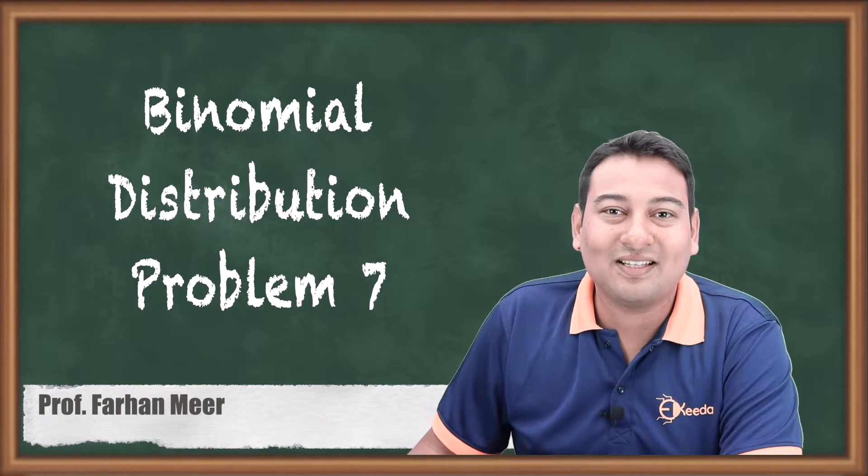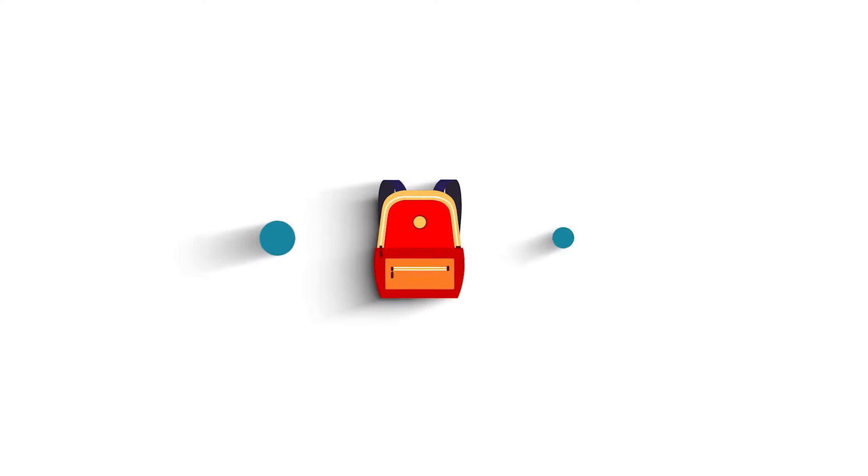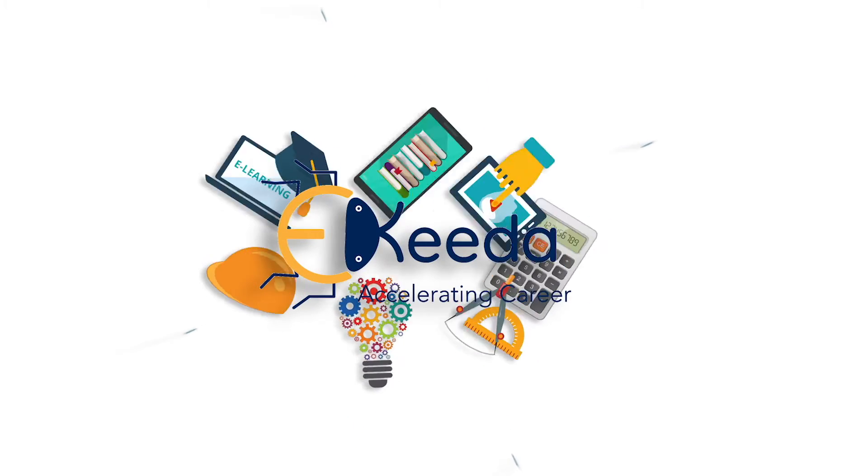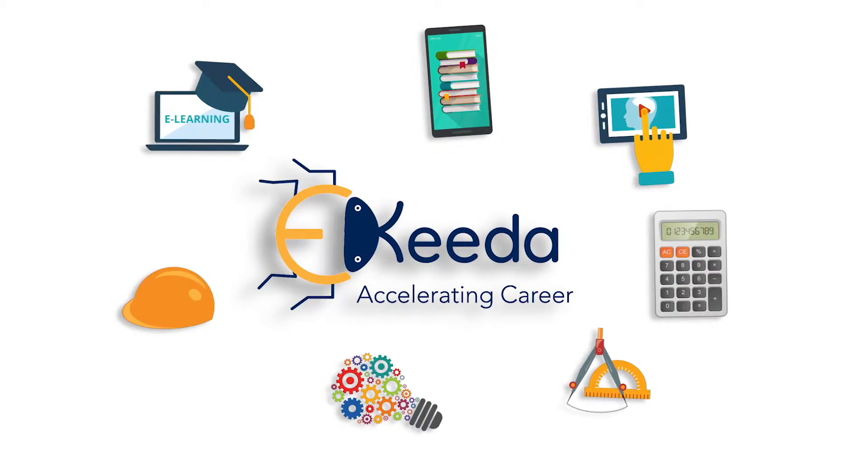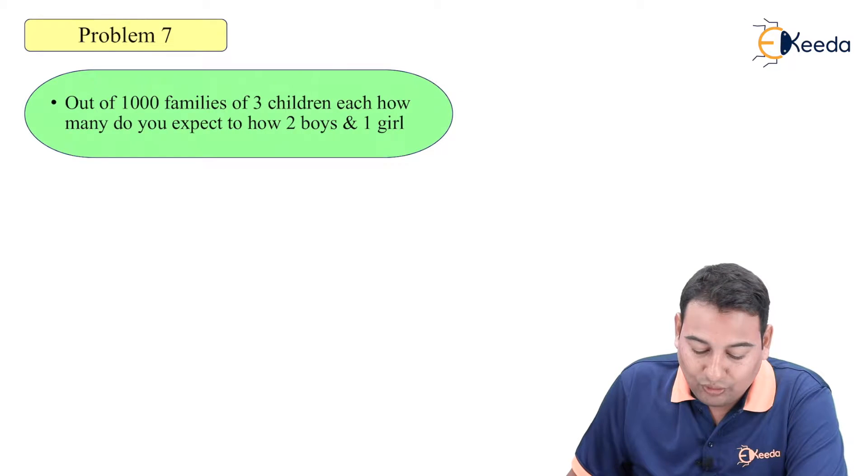Hello friends, in this video we will be discussing binomial distribution and this is our 7th example. Welcome back friends, let's have a look on the given problem. Out of 1000 families of 3 children each, how many do you expect to have 2 boys and 1 girl?